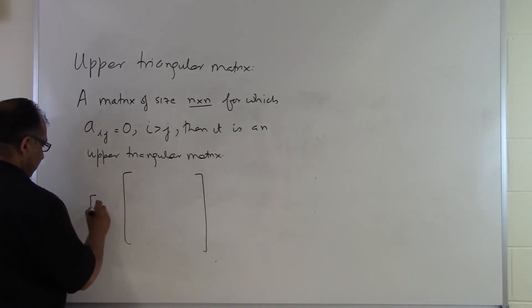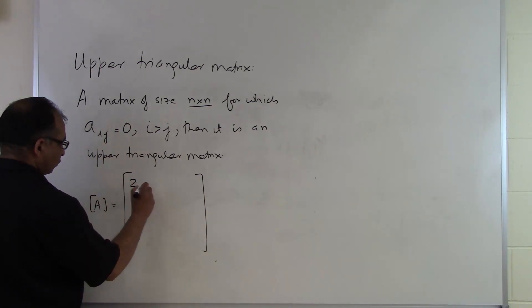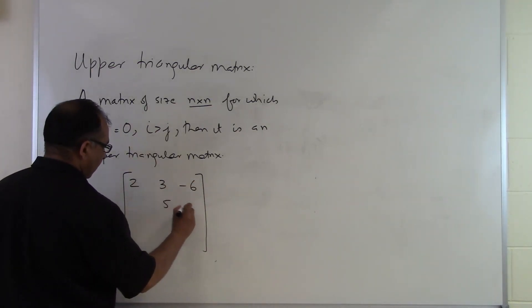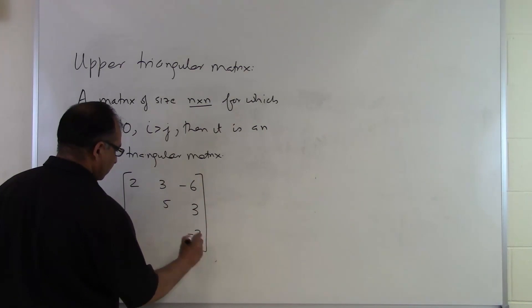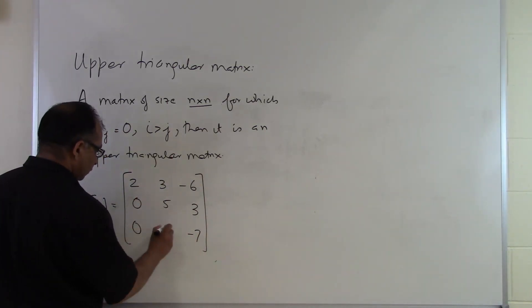So let's see. We have A equals 2, 3, minus 6, 0, 5, 3, 0, 0, minus 7.